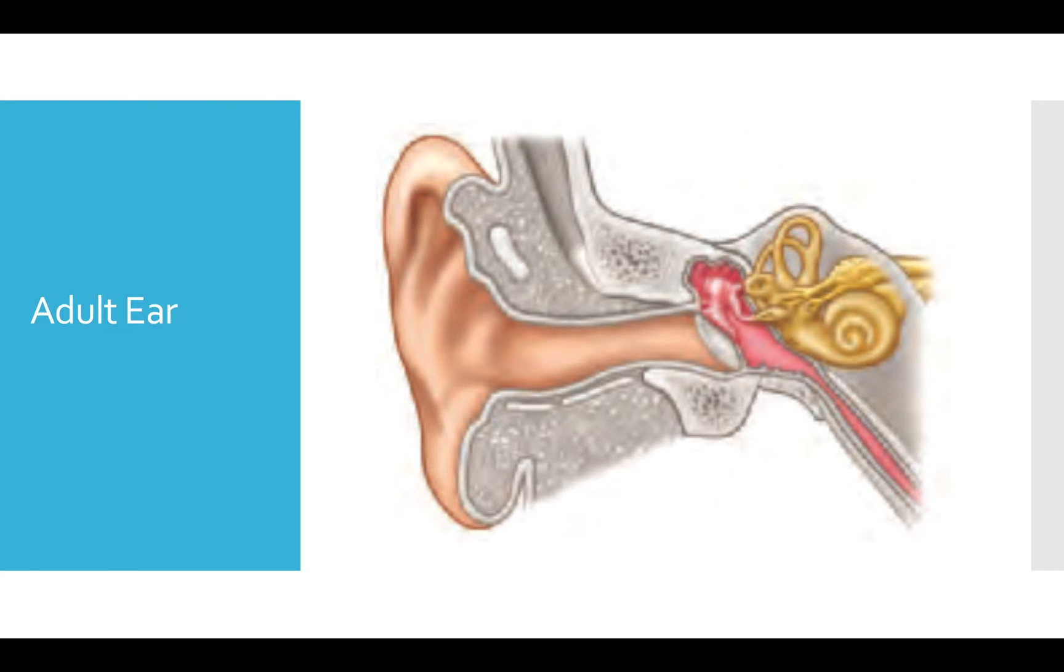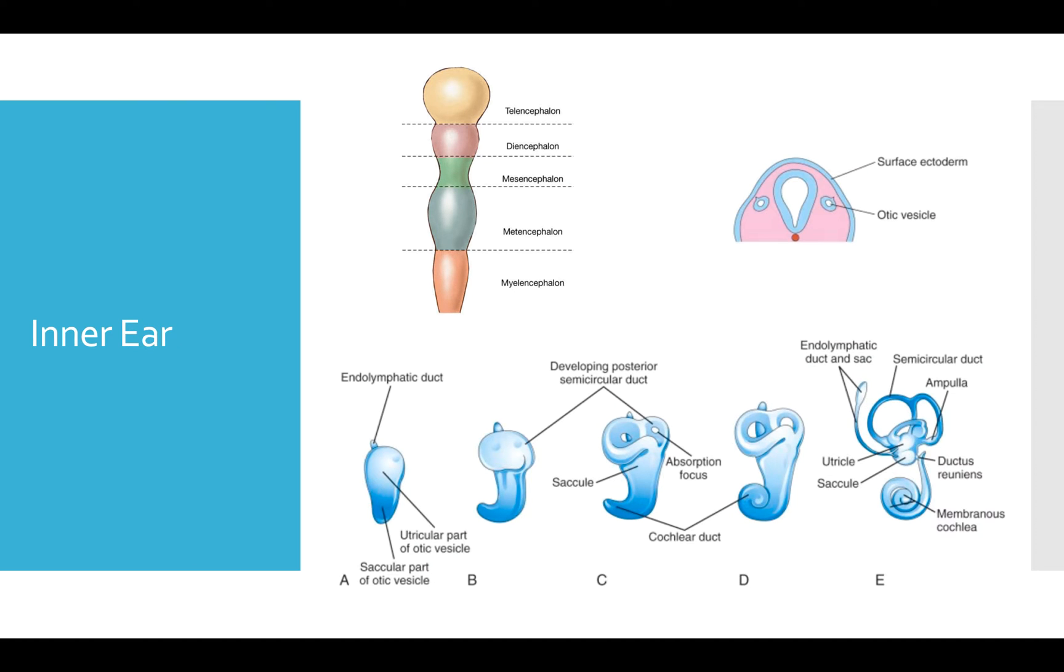The inner ear has origins in the ectoderm of the neural tube, where the middle ear and the outer ear have origins in the pharyngeal apparatus. So we're going to go ahead and get started with the development of the inner ear, because that's actually the first thing to form in the embryo.